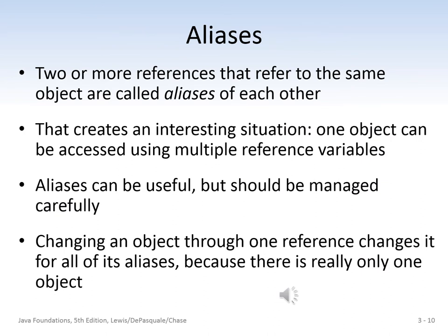Given the situation we just covered, we were left with two references referring to the same object. When you have more than one reference to the same object, they're called aliases of each other. One object can be accessed using multiple reference variables. This can be useful, but should be managed very carefully. Changing an object through one reference changes it for all of its aliases, because there's really only one object being referred to by multiple aliases. You can see where this could be problematic.